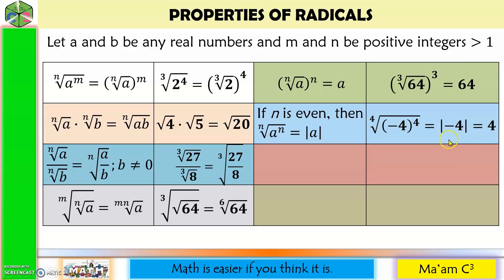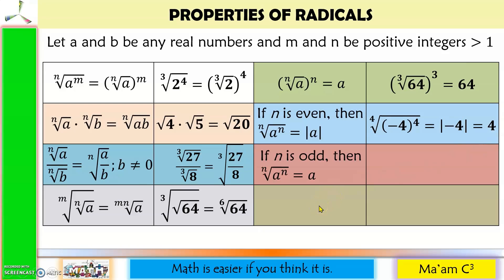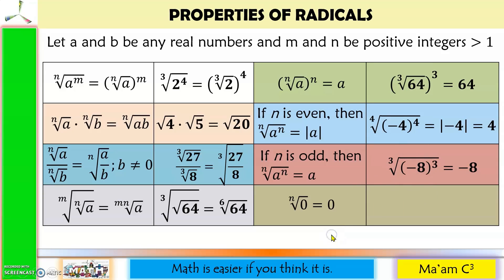Remember, absolute value means the distance of that number from 0. Since there is no negative distance, the absolute value is just the positive equivalent of that number. Next, if n is odd, then the nth root of a to the n is equal to a. Example: cube root of quantity negative 8 to the 3rd power — since our index is odd, we simply copy the value of a, which is negative 8. No need to get the absolute value if the index is an odd number. Last, the nth root of 0 is equal to 0. Example: the 9th root of 0 is equal to 0.